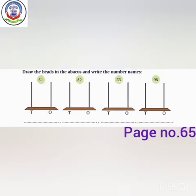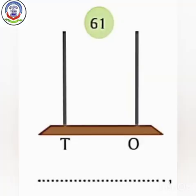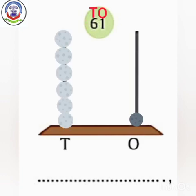Now we will do another exercise: draw the beads in the abacus and write the number names. We will write 10s and 1s first. Here we will write 1s and here we will write 10s. How many 1s do we have? We have 1 one, so we will make 1 bead at the 1s place. How many 10s do we have? We have 6 tens, so we will make 6 beads at the 10s place. The number name is 61.